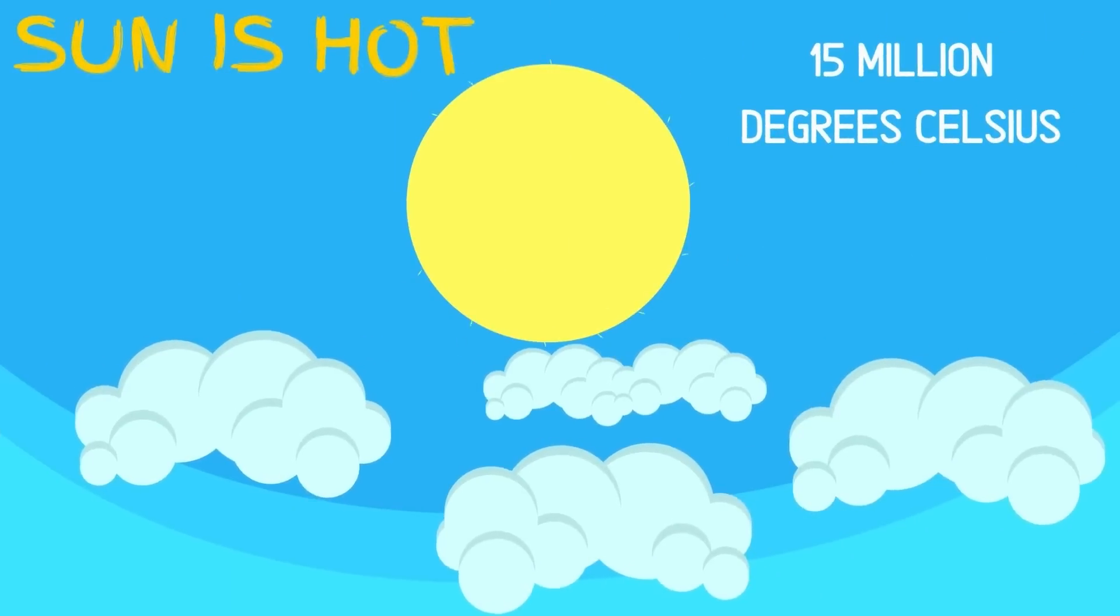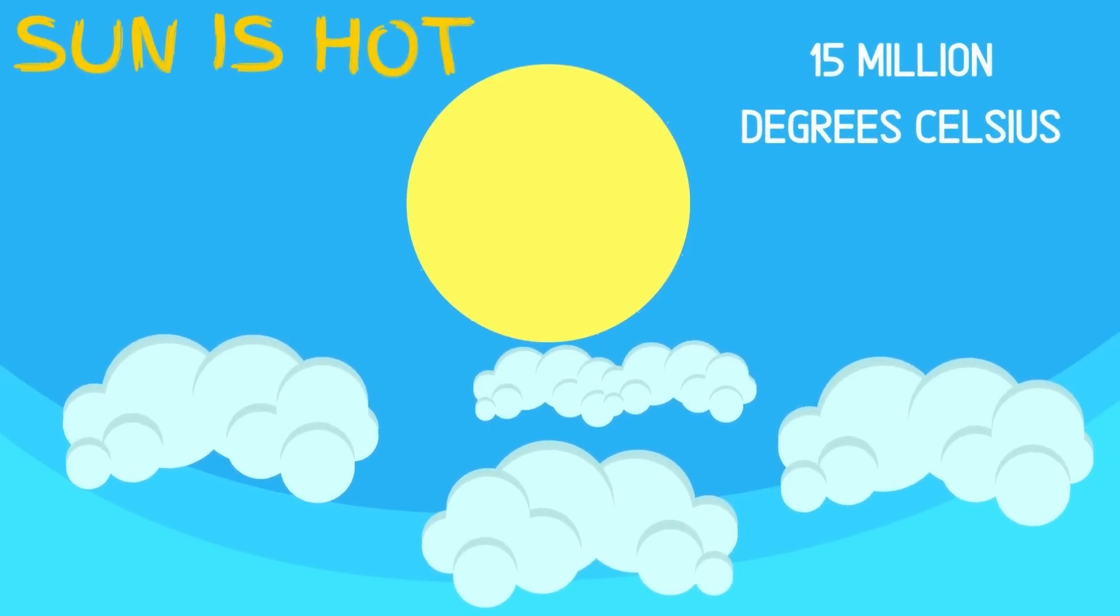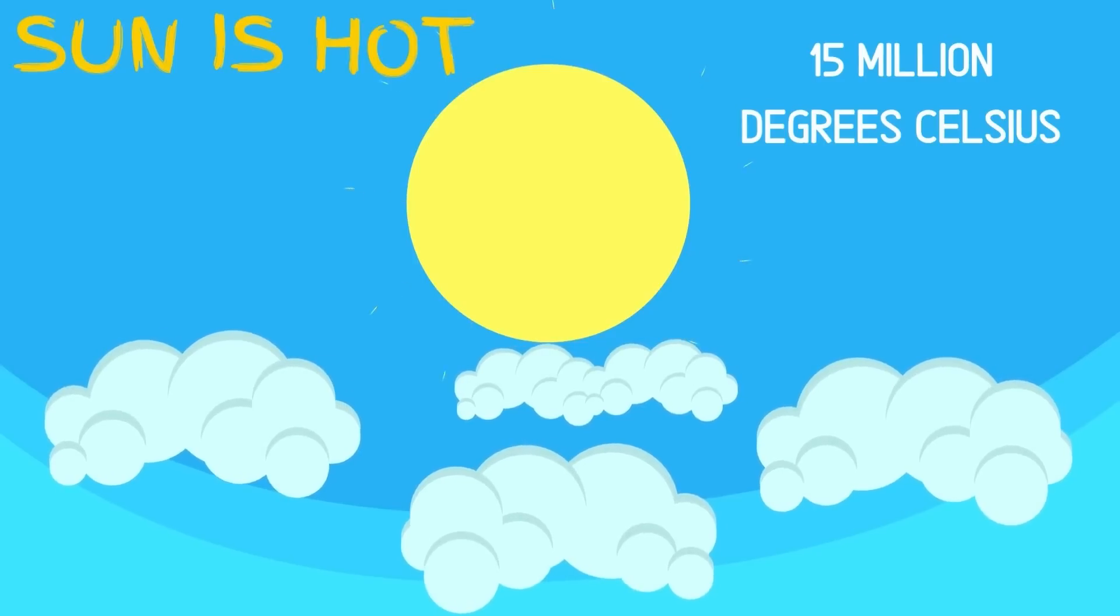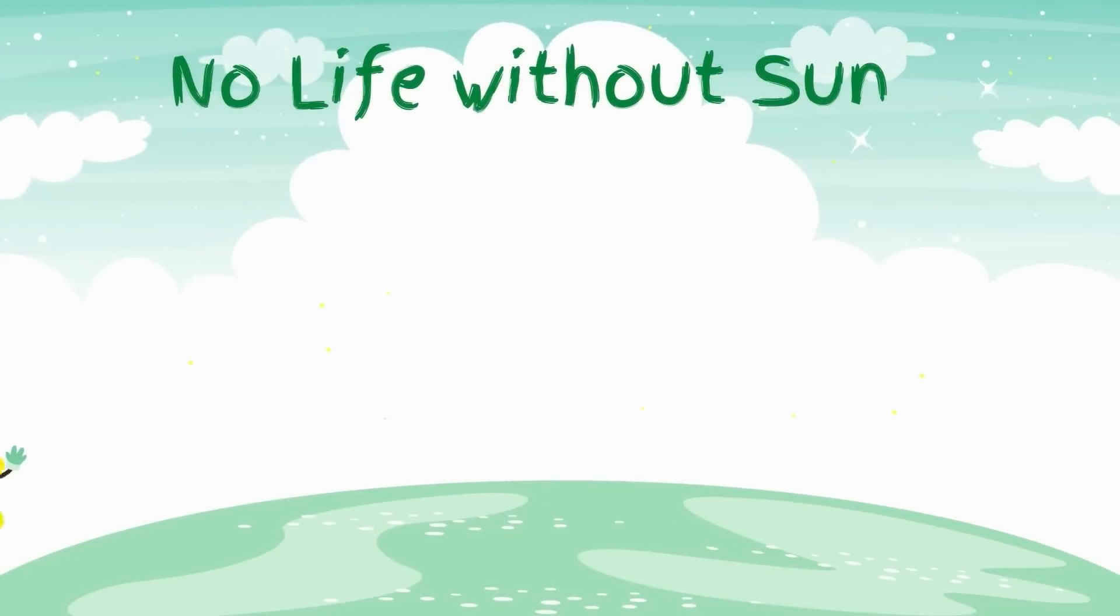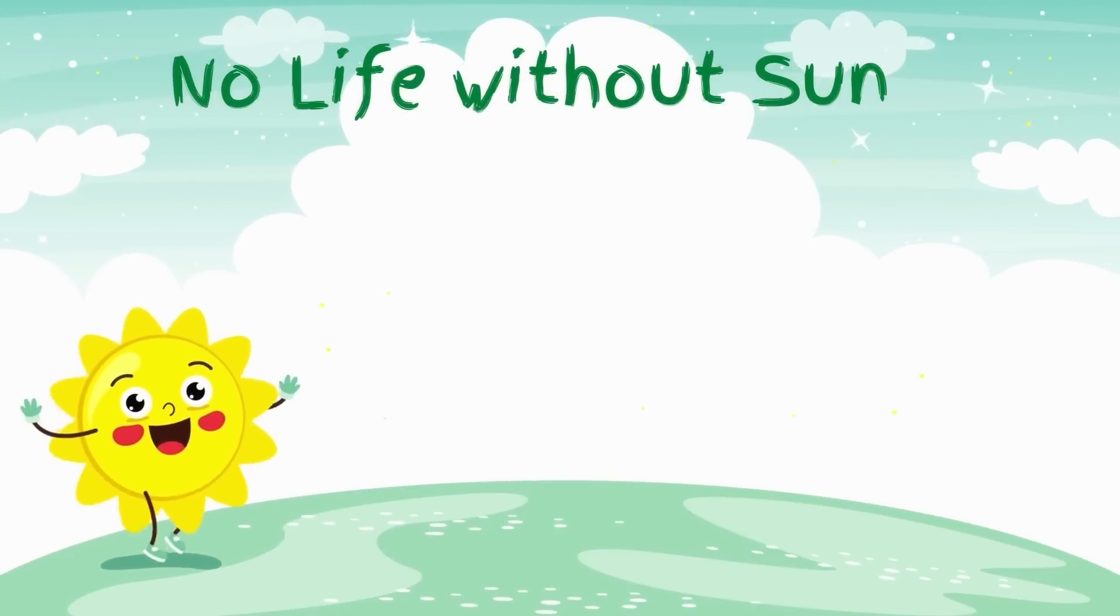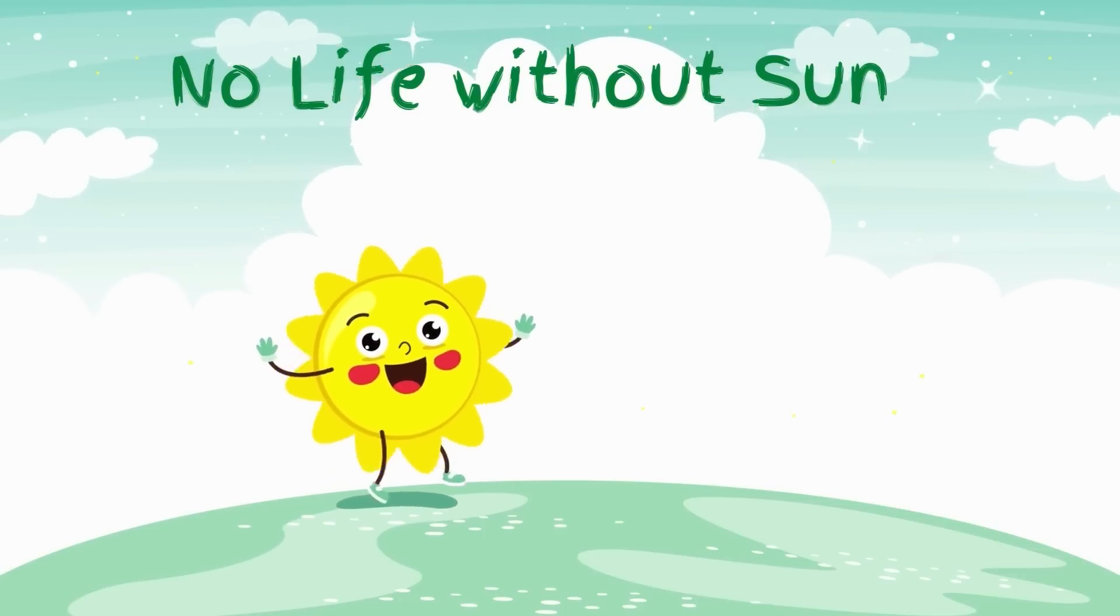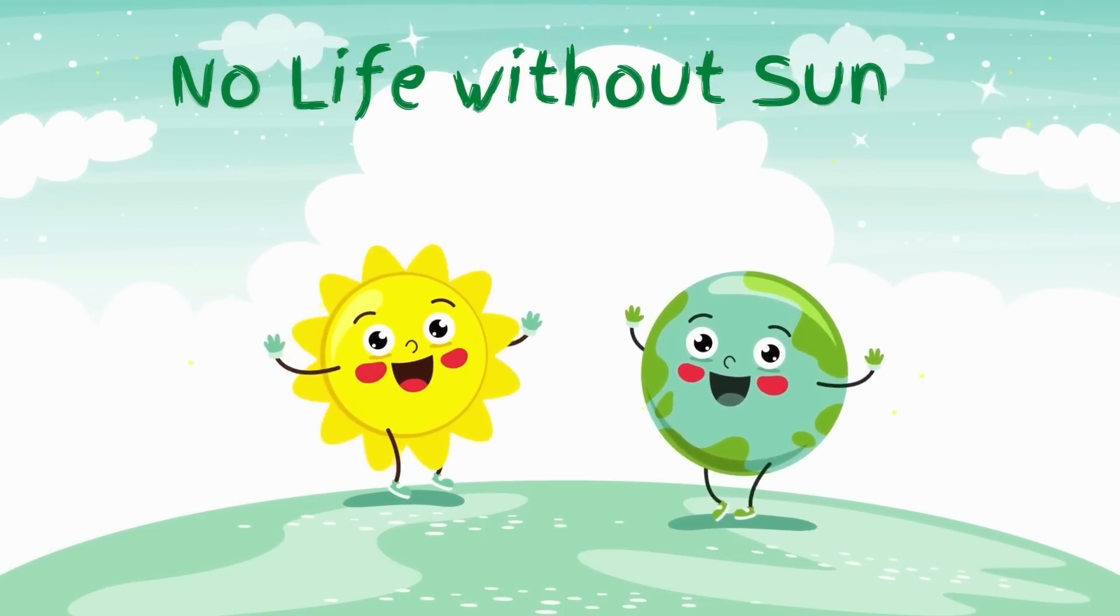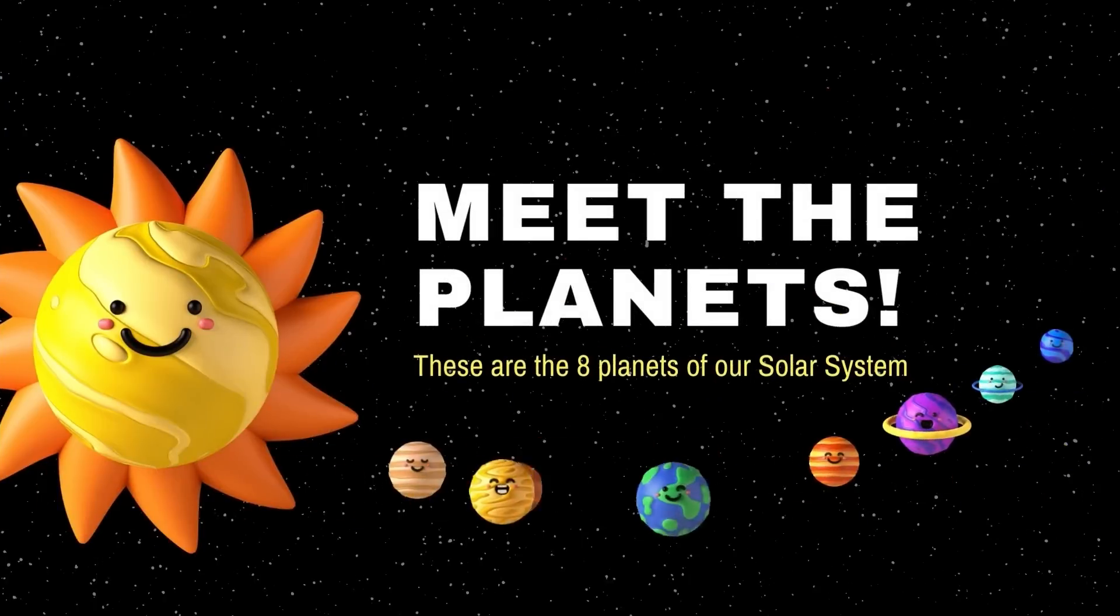The sun is so hot. The hottest part of the sun is its core where the temperature is 15 million degrees Celsius. Without the sun, the Earth would be a dark and lifeless planet. Let's meet our eight planets.